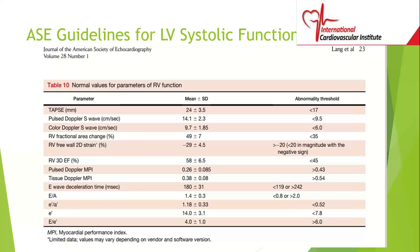I recommend that during your routine study you do at least these two: TAPSE and the pulsed Doppler S wave. You do TAPSE with M-mode, then switch to Doppler — you have two methods to evaluate RV systolic function. Fractional area change is not a routine measure; it's abnormal if less than 35%, so it should be 35% or greater.